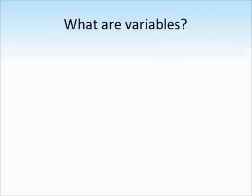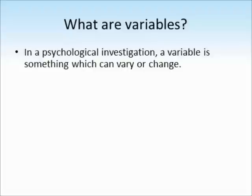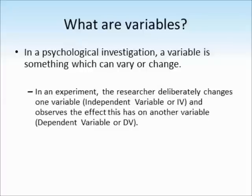So let's have a talk about what we mean when we use the word variable. In a psychological investigation, a variable is just something which can vary or change. If we're doing an experiment, this is where the researcher will deliberately change one variable, which is called the independent variable or IV for short, and then they observe the effect that this has on another variable, which is known as the dependent variable or DV.